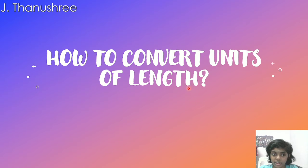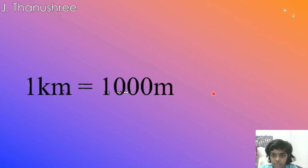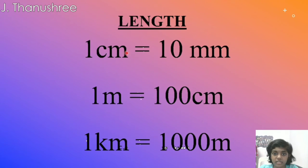Now we are going to see how to convert units of length. Ok friends, we must remember this: 1cm equals to 10mm, 1m equals to 100cm, 1km equals to 1000m.